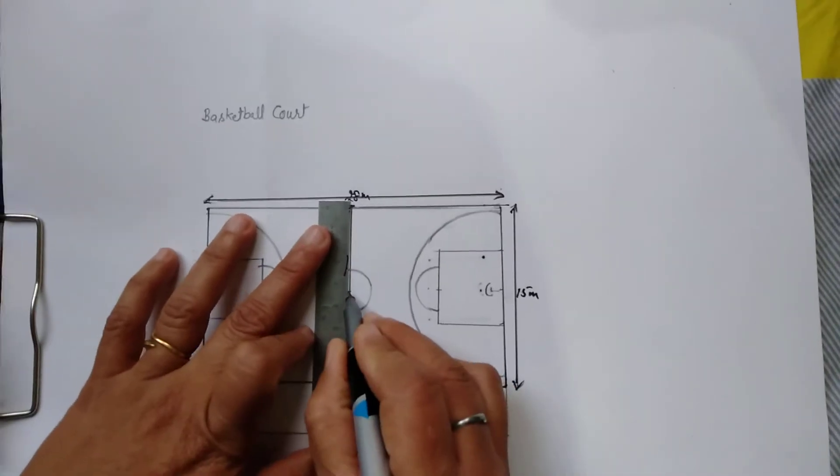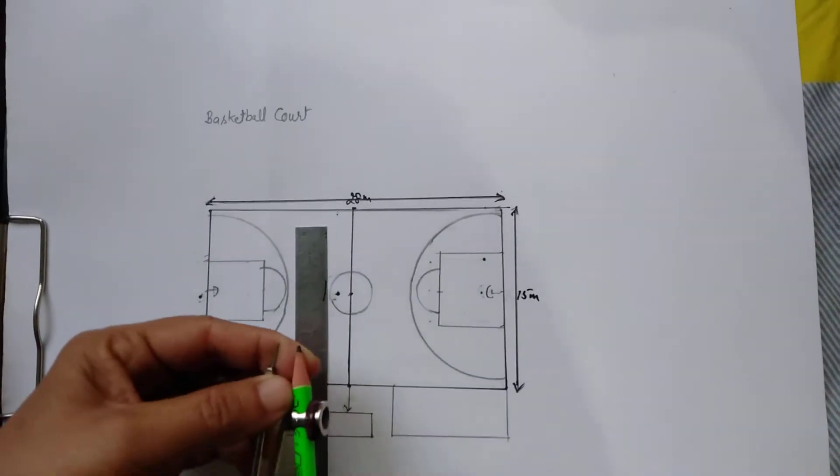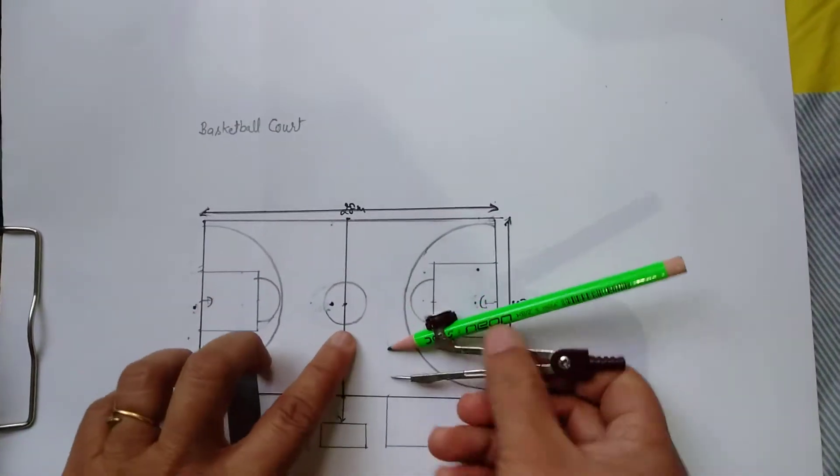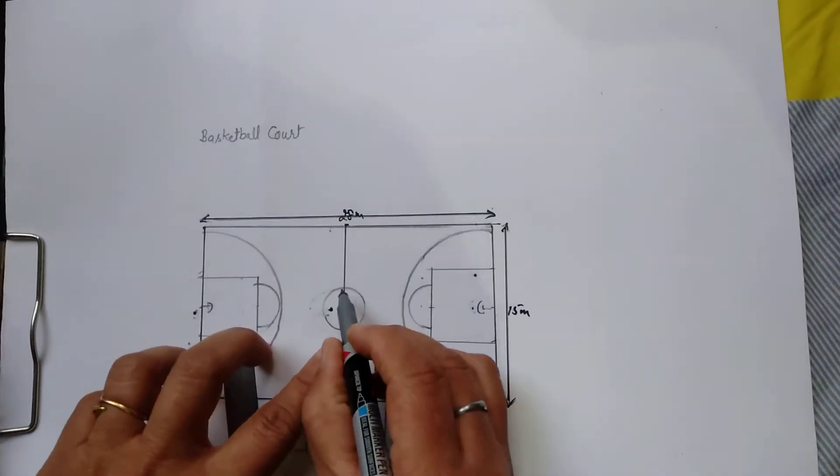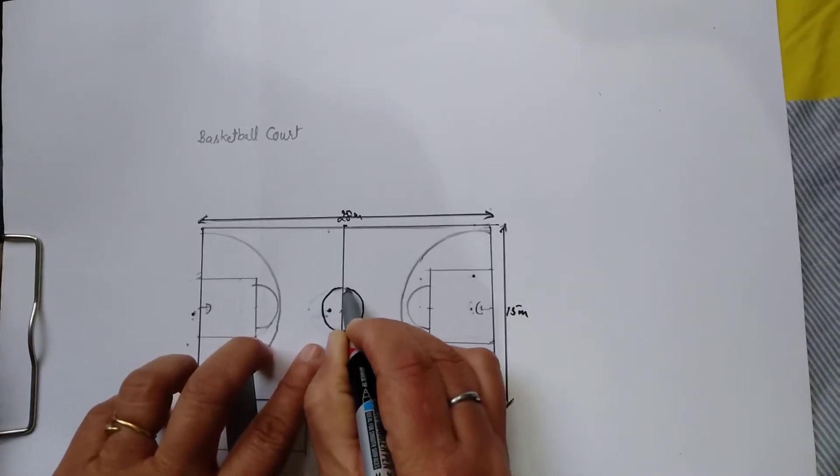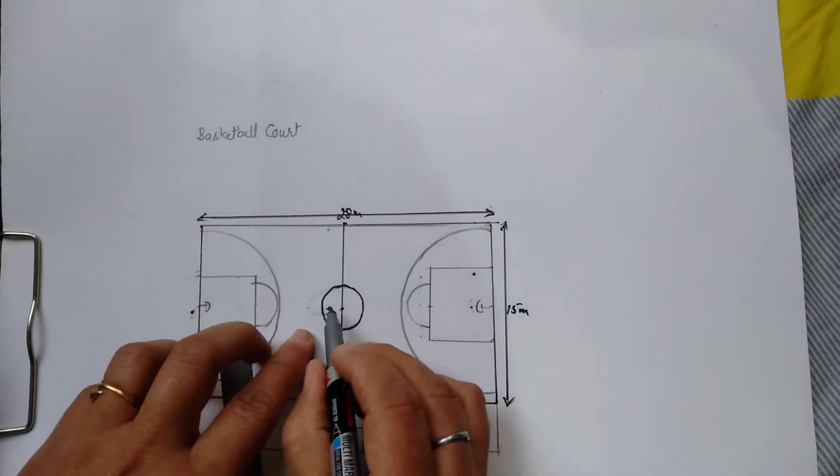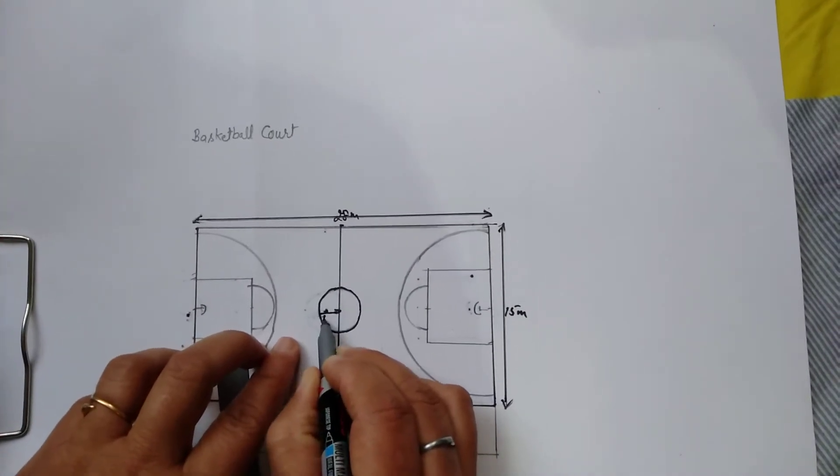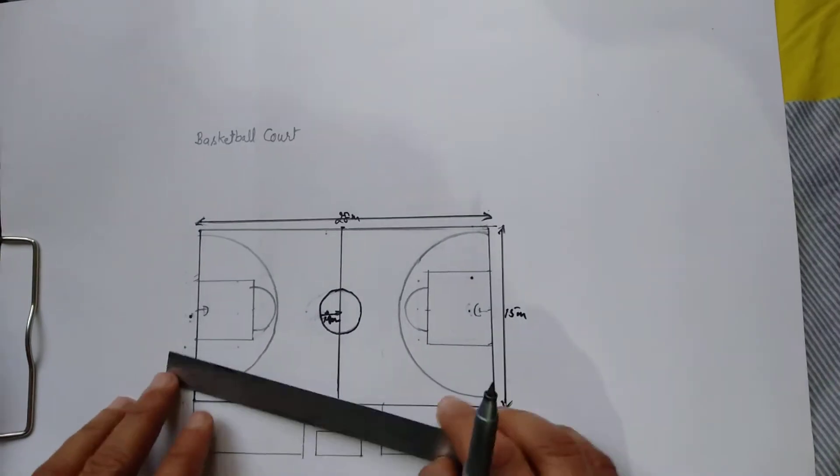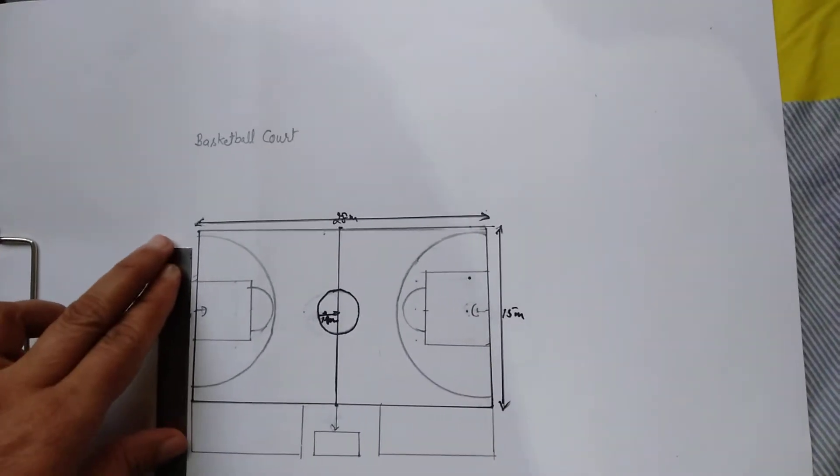We put the center here with the help of this compass. One and a half. We make the center circle. The radius of this circle is 1.80 meters. By the other side, the width of the scale according to scale is one and a half centimeters.